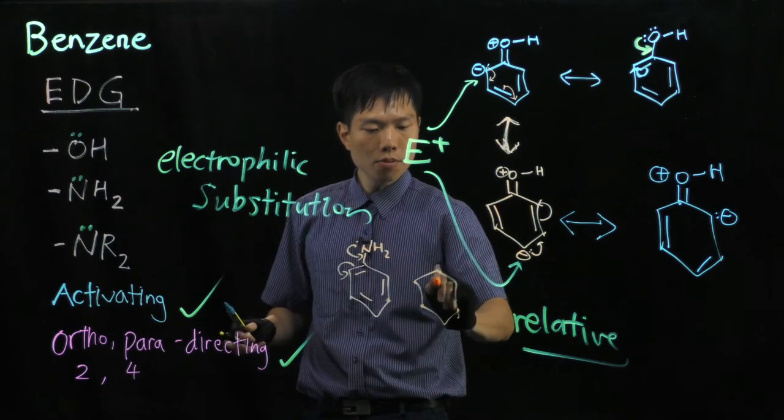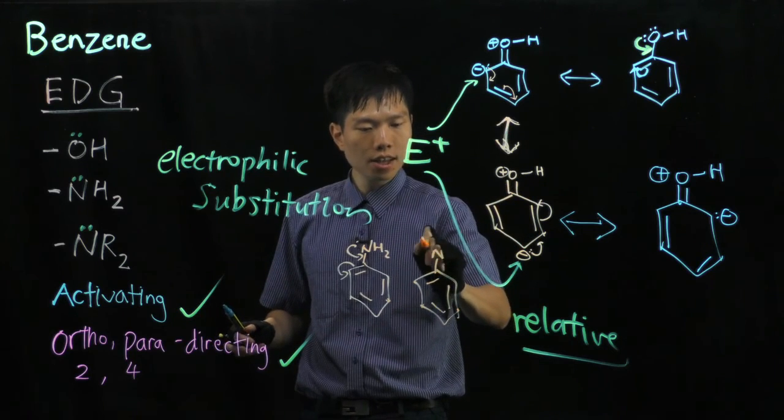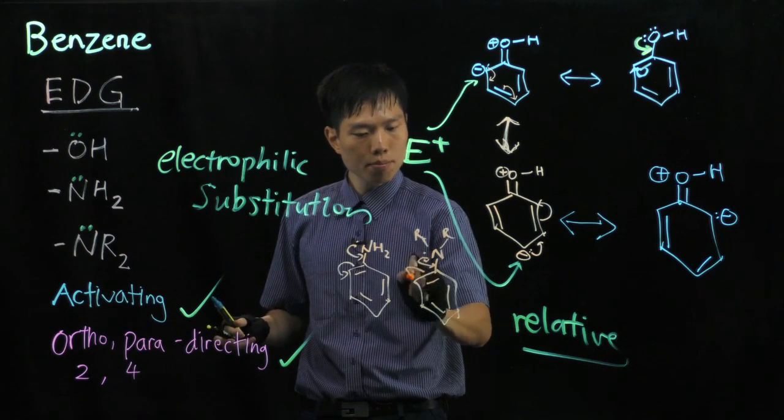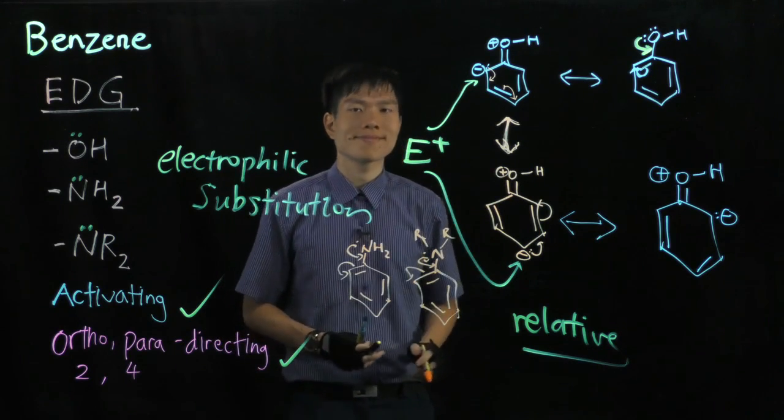And the other form of amine, when you have N, R, R, the alkyl group, again lone pair, pushed, and pushed into the ring.